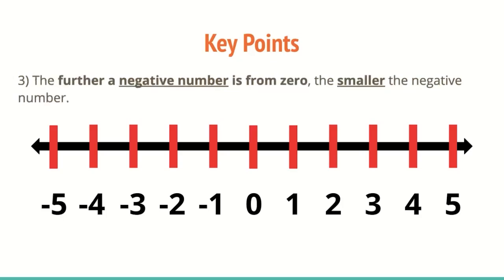Three, the further a negative number is from zero, the smaller that negative number. So for example, if we looked at negative four and negative two, a lot of the most common mistake is that someone sees the number four, thinks that four is larger than two, but forgets that it's negative four and negative two. So they would assume that negative four is actually larger when in fact, negative four is further to the left on the number line, which makes it smaller than negative two.